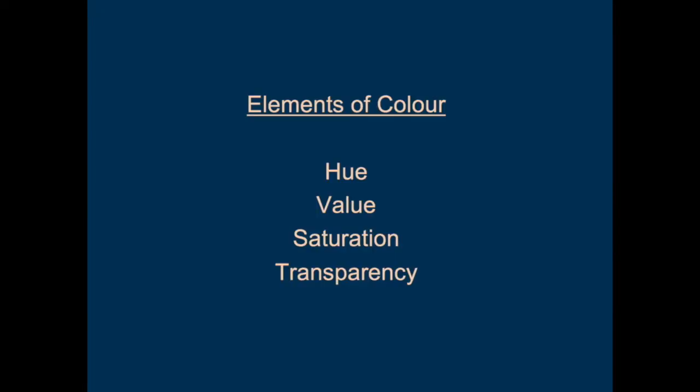For painters, there are four basic elements: hue, value, saturation. And because we deal with specific material pigments, we have something called transparency — some paints are transparent, some paints aren't, and that adds another dimension. But I'm going to stick to just the main three of hue, value, and saturation, which are used wherever people are using color in any industry.